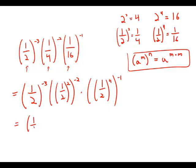So now we get 1 half to the negative 3 times 1 half to the 2 times negative 2, which is negative 4 times 1 half to the 4 times negative 1, which is negative 4.